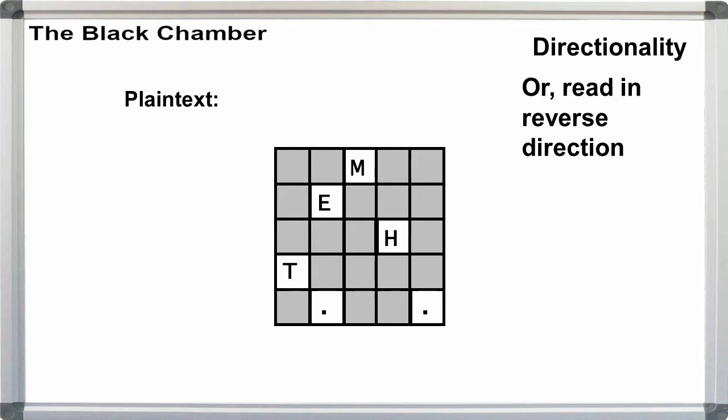Of course, it's always conceivable that the sender and recipient agreed to go from bottom right up to the top left, but that's up to them. The Black Chamber guideline is to work from top left in rows to bottom right.